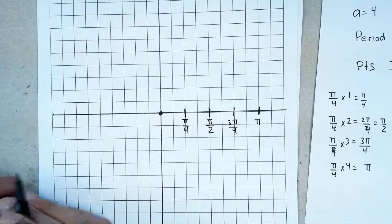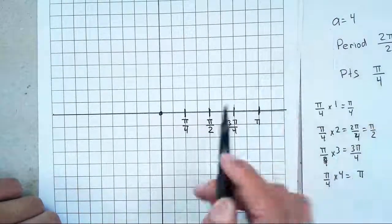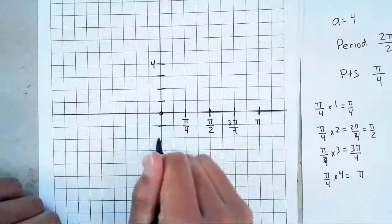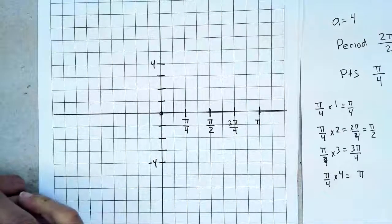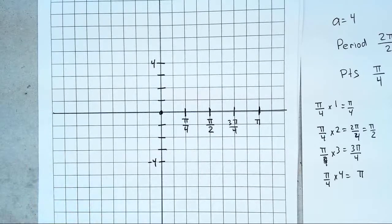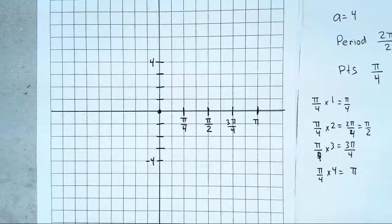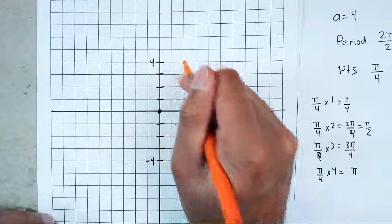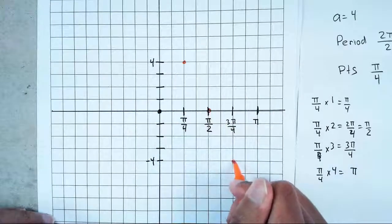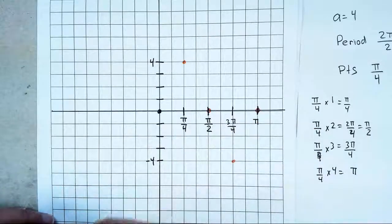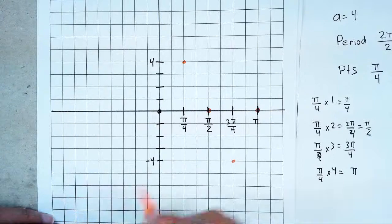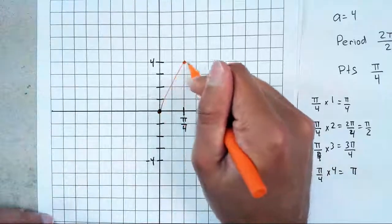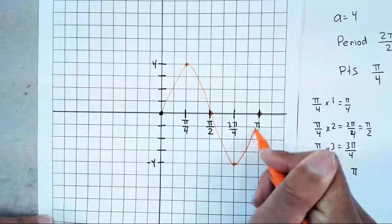Now you have your points, but how high and low do you go? Your A was 4, so you're going to go up to 4 and as well as negative 4. Now graph everything. Remember that sine starts off in the center. The next point goes up, then back to center, then down, then back to center. Connect your lines and you get a graph.